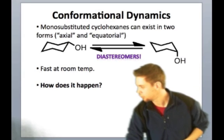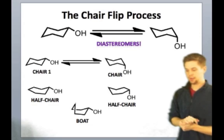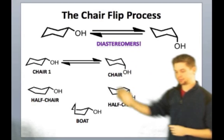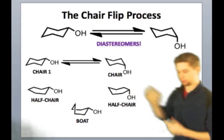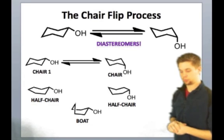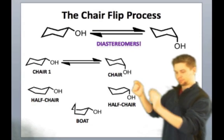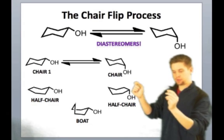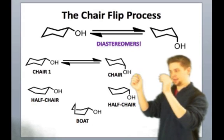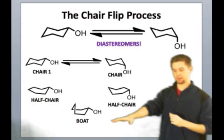All right, so let's look at this process in a little more detail now. The chair flip process is shown for you here. The two chairs are shown right here, and various intermediates along the pathway are shown throughout. The first chair has the hydroxyl group in an equatorial position. What happens is that one end of the cyclohexane ring folds up and eventually reaches a point where it's actually above the plane on the same side as the other carbon, three carbons away. At that point, we have the boat conformation right here.